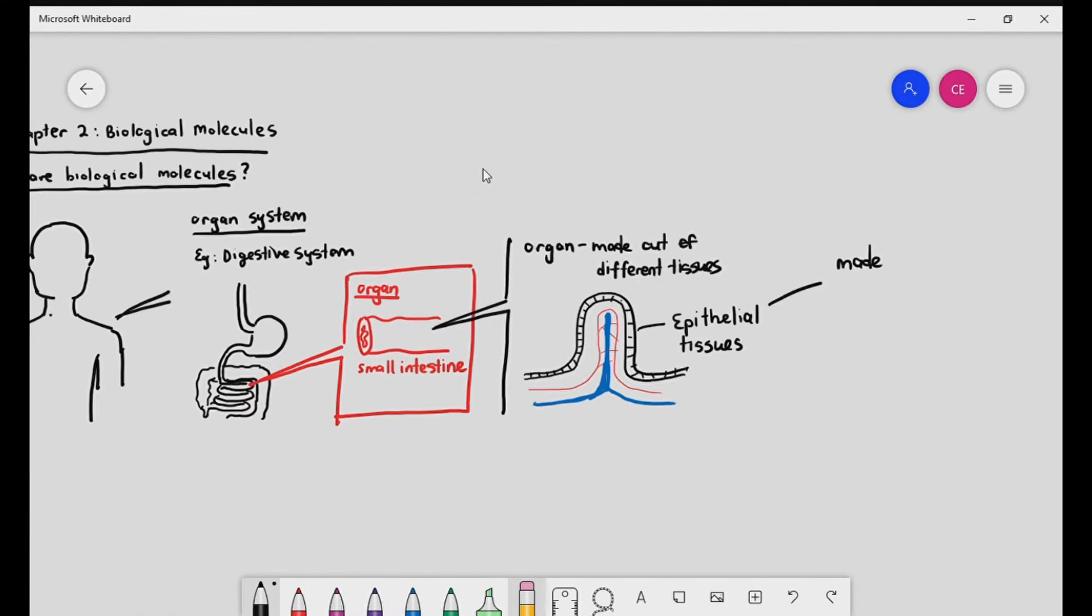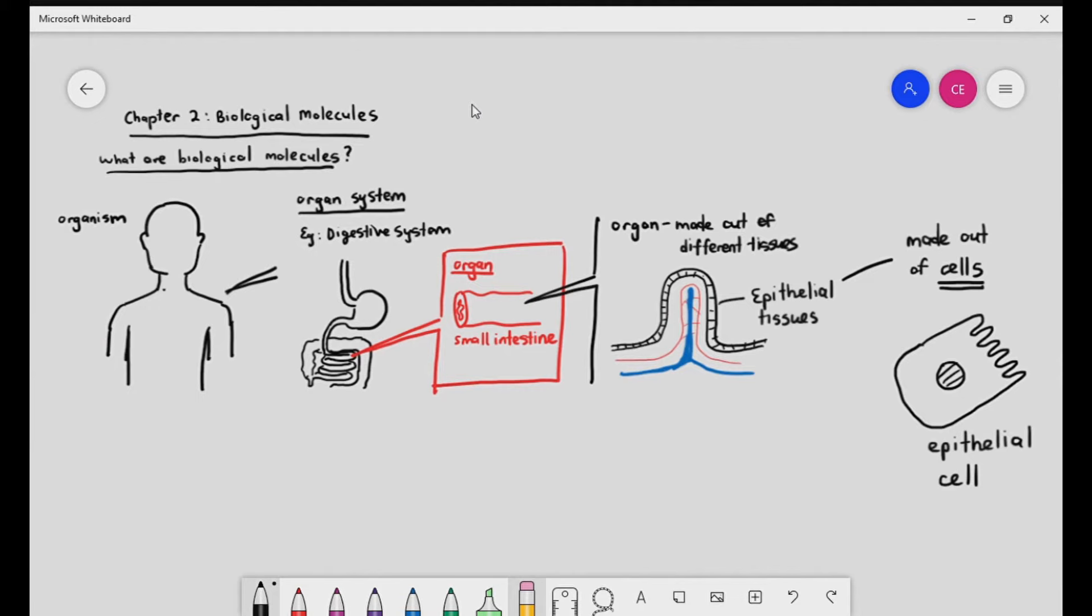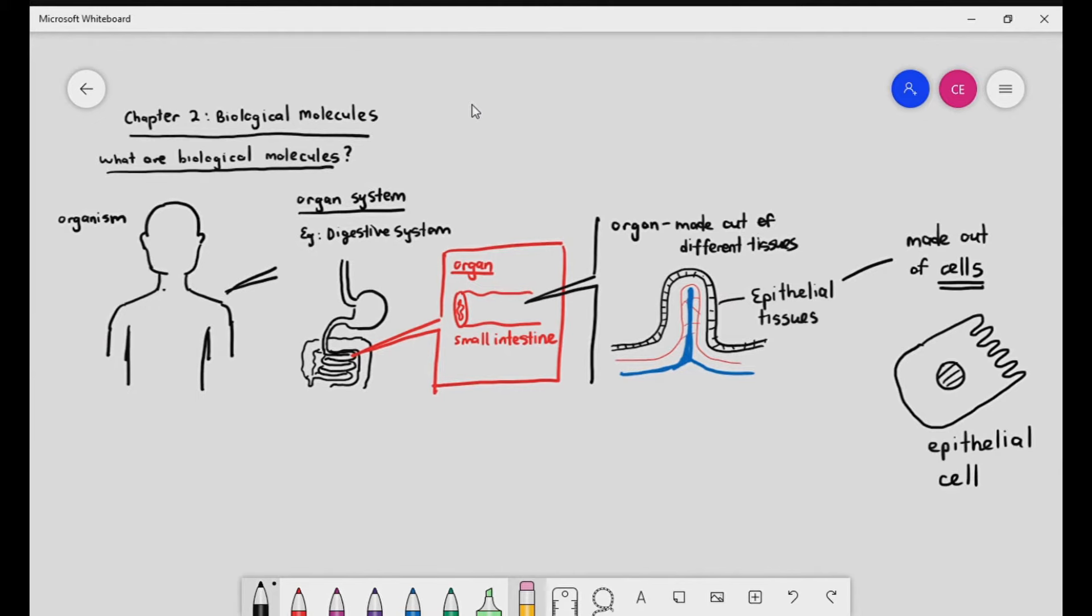And the epithelial tissues are made out of cells. So we are organisms, and organisms are made up of organ systems. Organ systems are made out of organs. Organs are made out of tissues. And tissues are made out of cells.